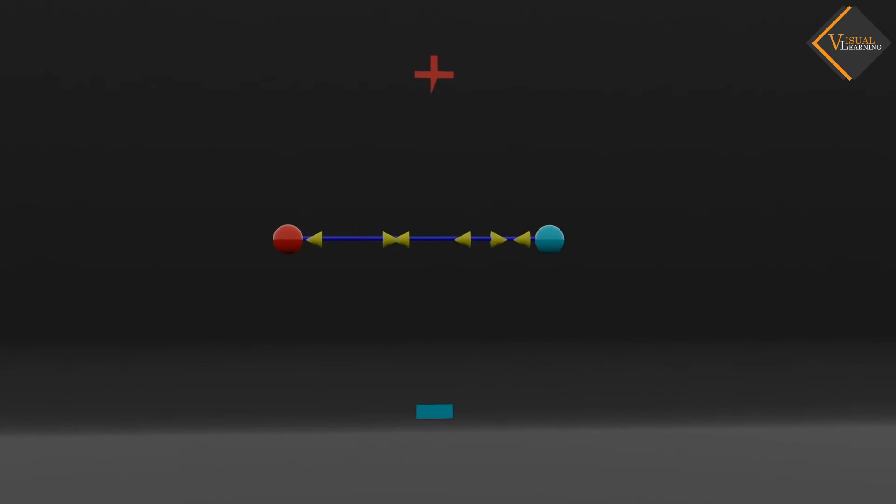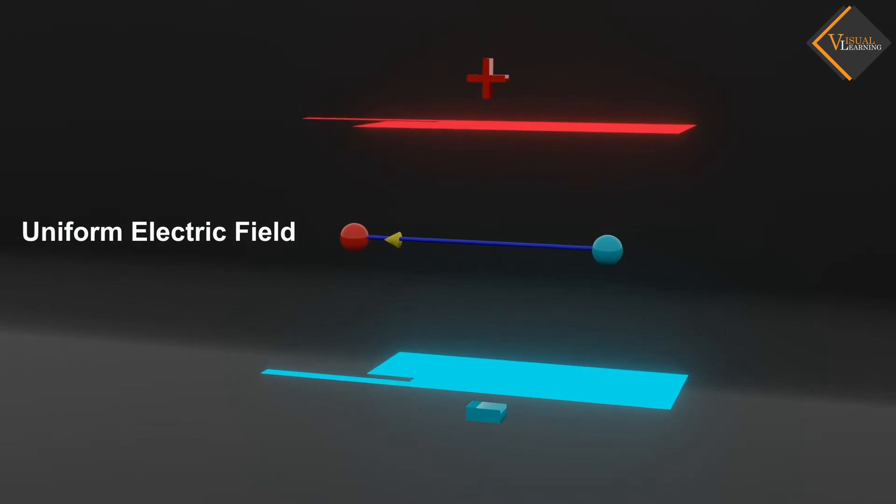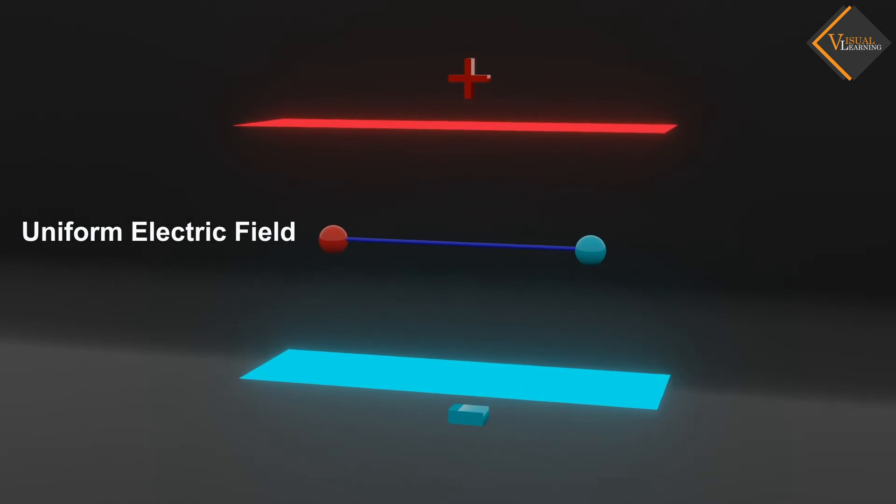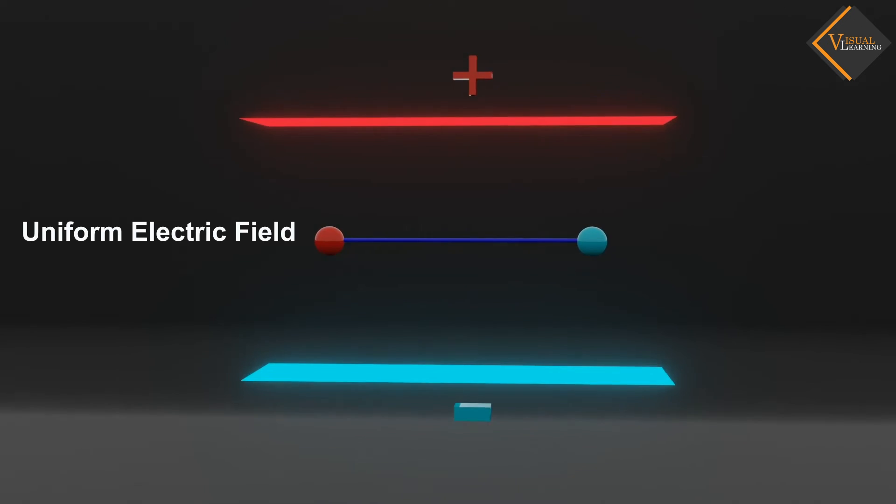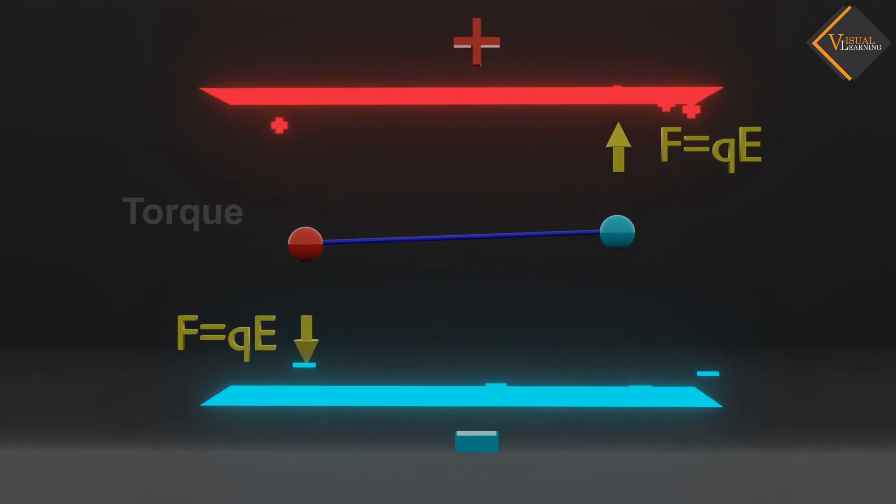When you place this dipole in a uniform electric field, forces act on the positive and negative charges in opposite directions due to the electric field. This causes the charges to move in opposite directions, creating a turning or rotational movement known as torque.